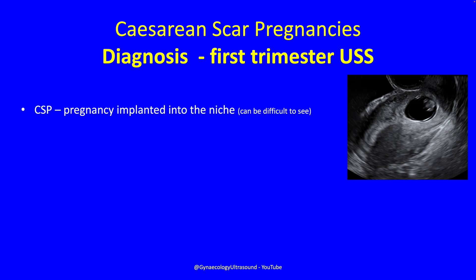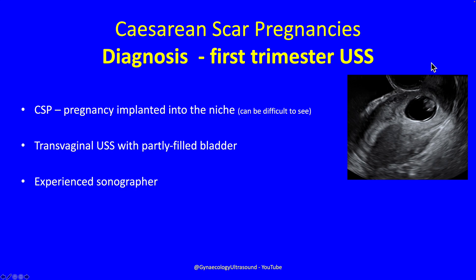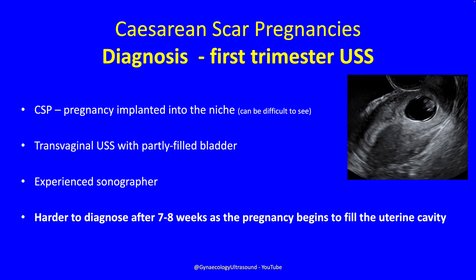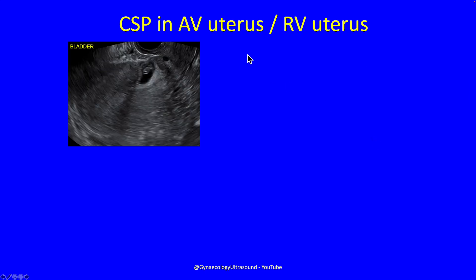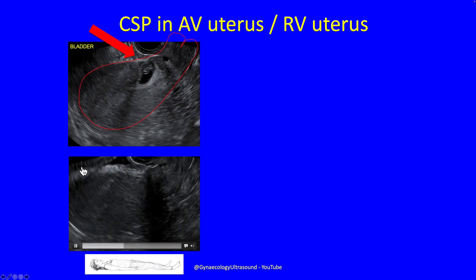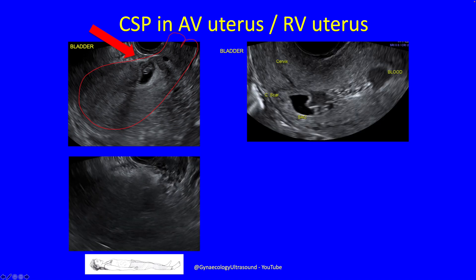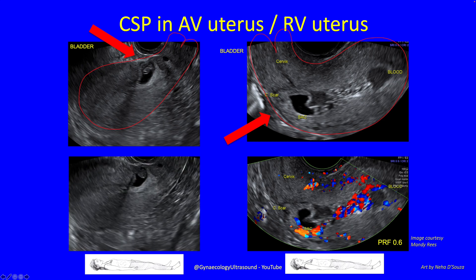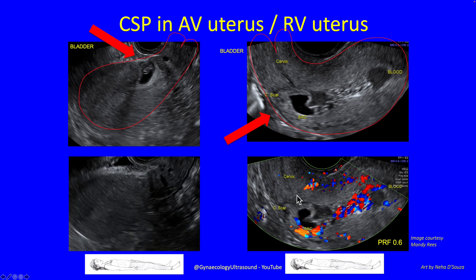In the first trimester ultrasound, the pregnancy is implanted into a niche — at this point you can't really see the niche but you know it must be there. There is an absence of myometrium or very thin myometrium. We do the ultrasound with a partially full bladder, which really helps to look at this area. With a bit of experience you'll be able to recognize these. Diagnosing scar pregnancies is much harder after about seven or eight weeks gestation because the pregnancy will start to fill the uterine cavity. In an anteverted uterus, the scar pregnancy is close to the bladder in the anterior uterine wall; in a retroverted uterus the fundus points toward the feet but the scar pregnancy is again in the anterior uterine wall just above the internal os.